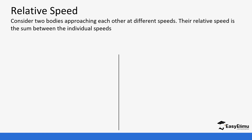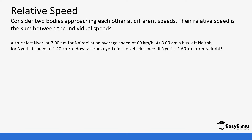So we consider relative speed and consider two bodies that are approaching each other at different speeds. Their relative speed is the sum of the individual speeds, which is going to be a bit contrary to when we talk about bodies that are overtaking each other. Let's look at this question slowly, work it out, and interpret. Interpretation in relative speed is very important.